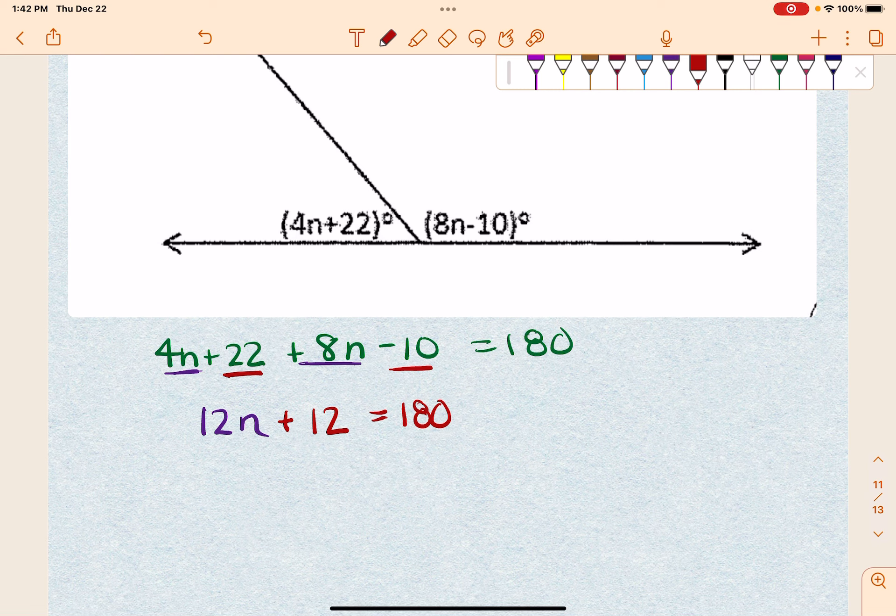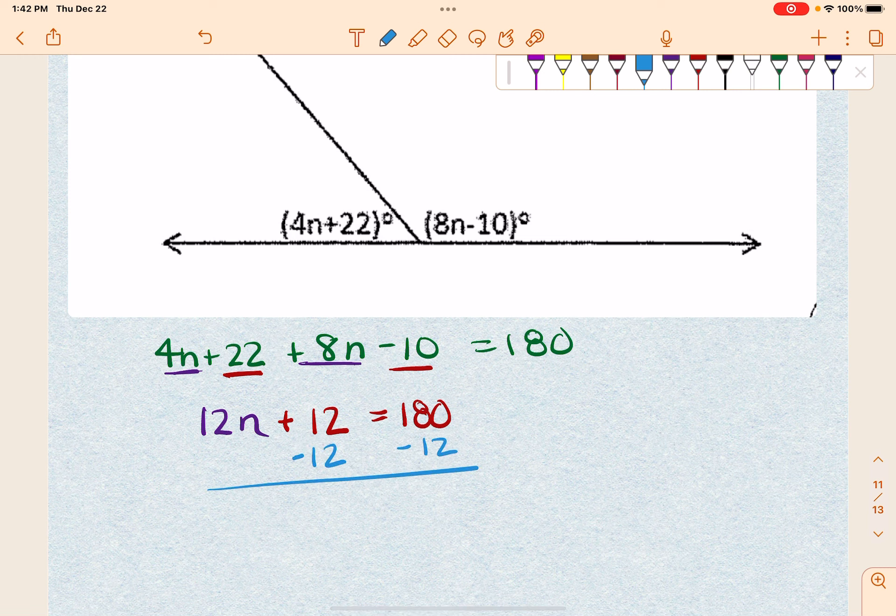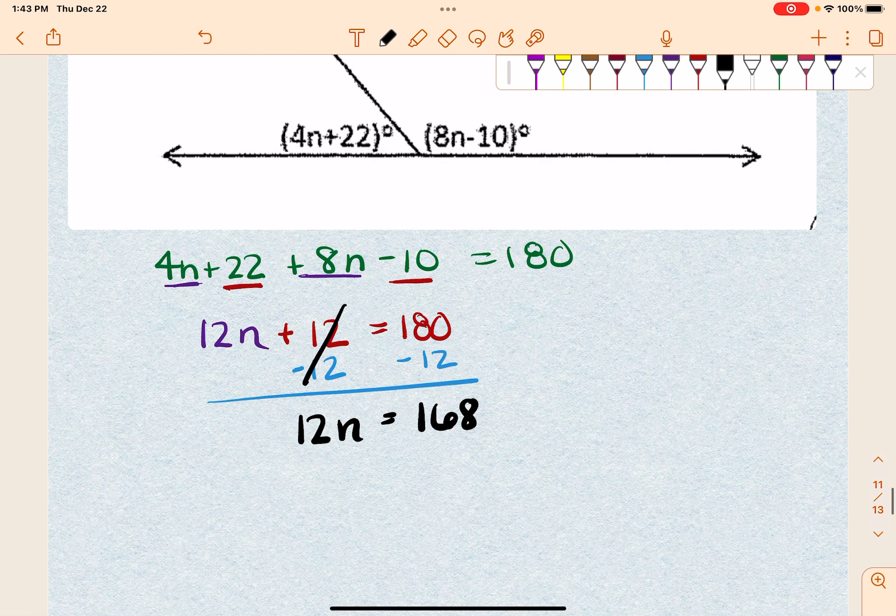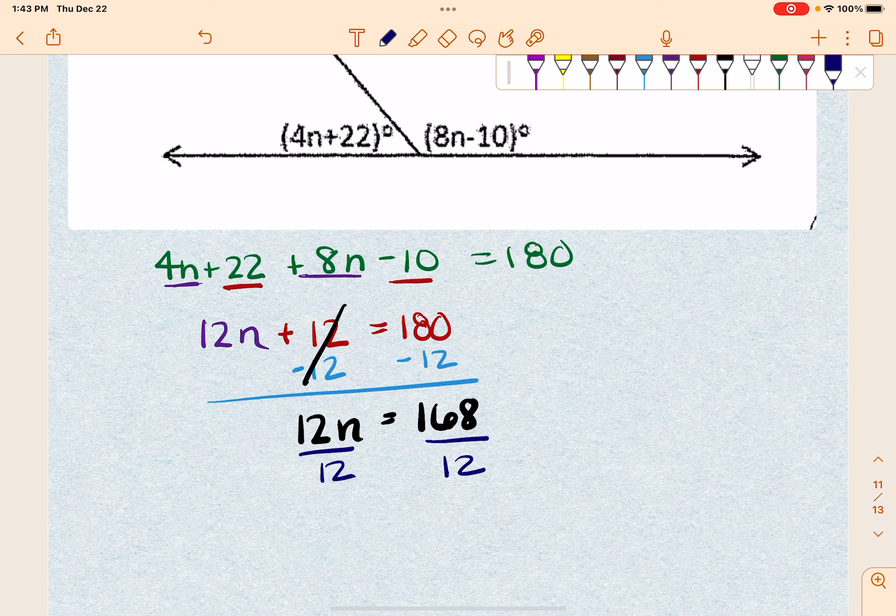Okay, now I've got to work to get n by itself. So I'm going to get rid of the 12 right here. So that is adding 12. So I'm going to subtract 12. Cancels. I'm left with 12n. It equals 168. And then divide both sides by 12. And I get n equals 14.